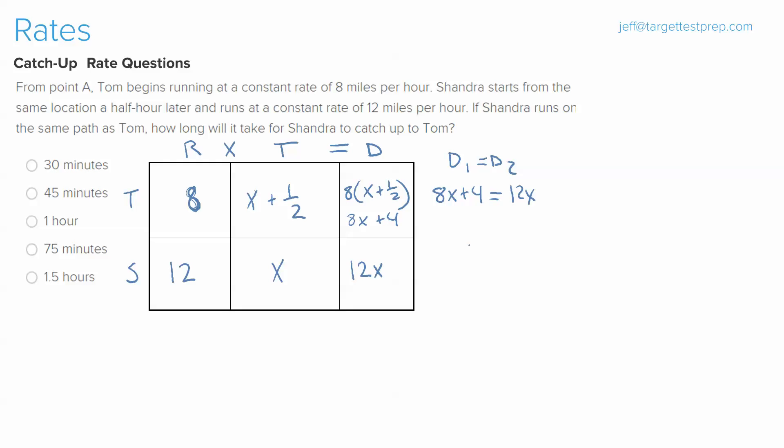Now the best part is we have an easy equation. We bring the 8x over from the left to the right, giving us 4 equals 4x. Divide both sides by 4, x is 1.